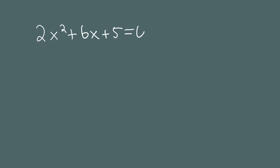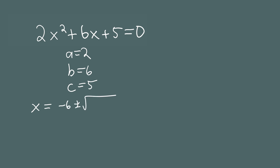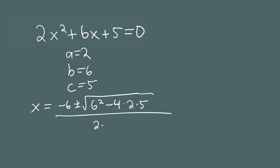For the third example, let's look at the equation 2x squared plus 6x plus 5 equals 0. Here a is 2, b is 6, and c is 5. Putting these into the quadratic formula: x equals negative 6 plus or minus the square root of 6 squared minus 4 times 2 times 5, all over 2 times 2. The number under the radical — the discriminant — is 36 minus 40, which is negative 4. All over 4.